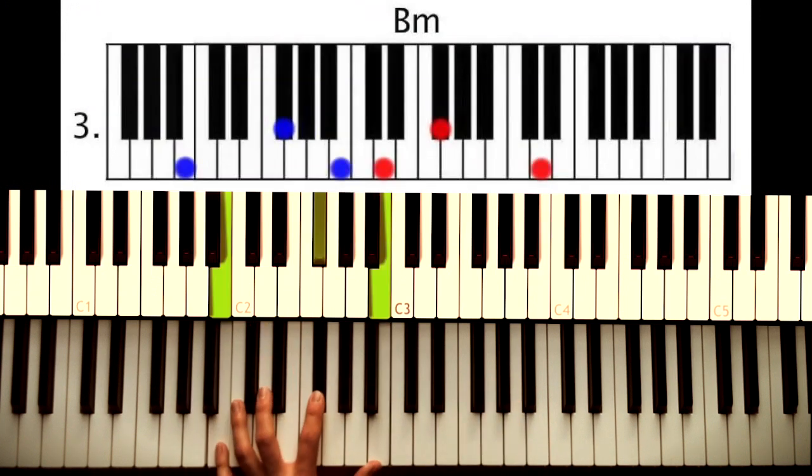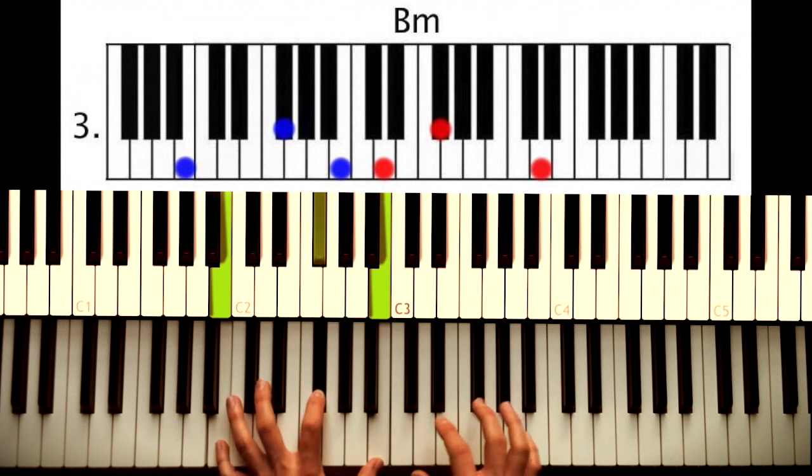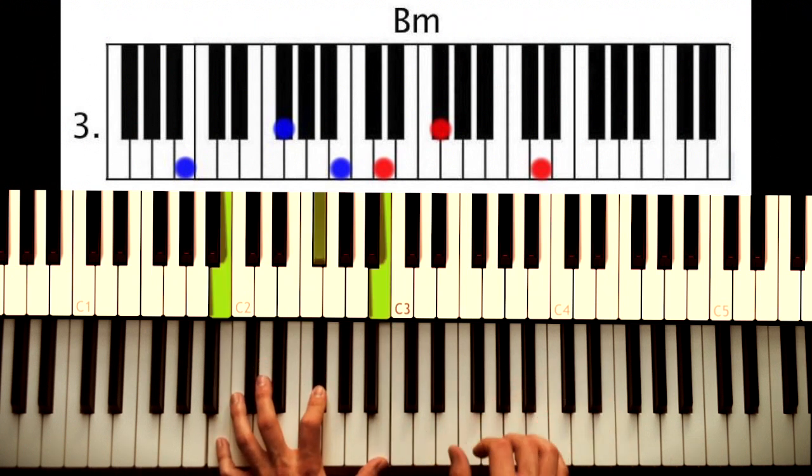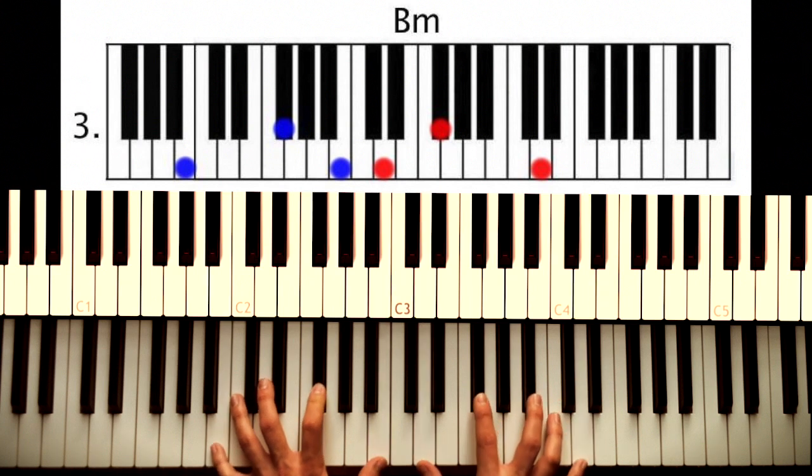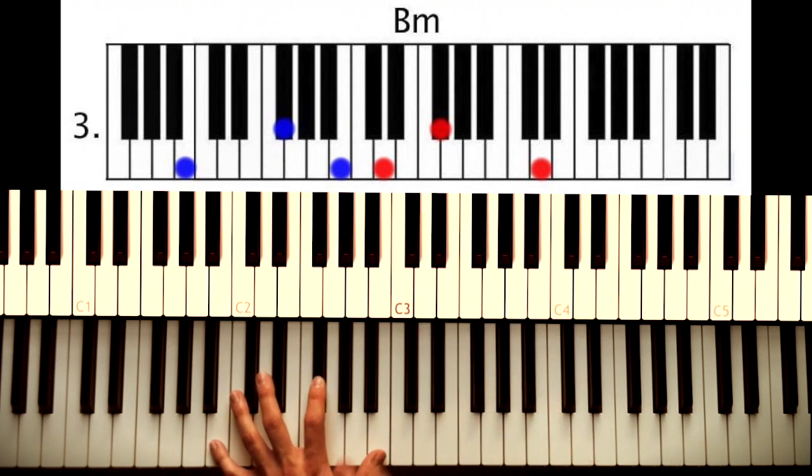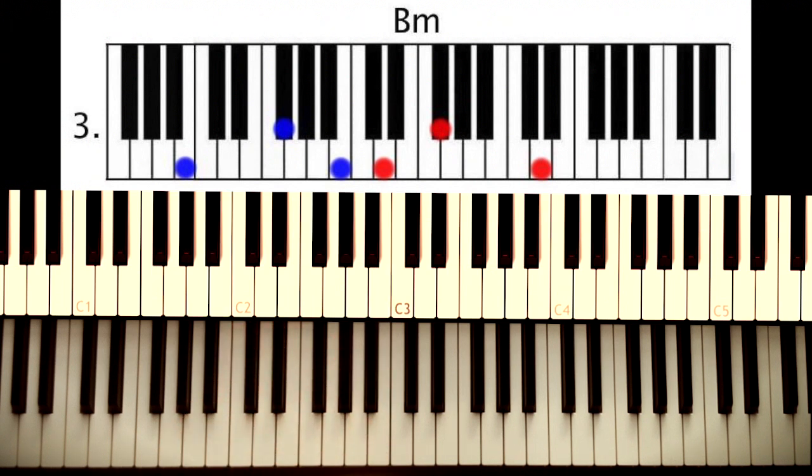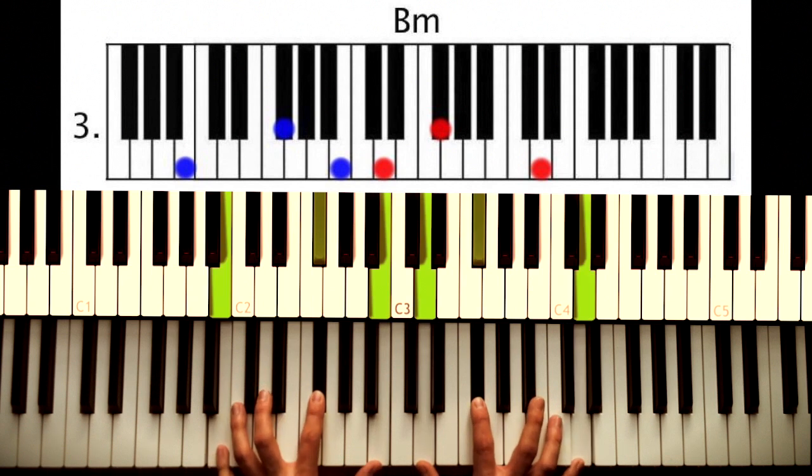Next chord is a B minor. Here the pattern for the left hand changes just this really tiny bit. The notes are B, B, and an F sharp. Right hand plays D, F sharp, D. Left hand now plays four beats instead of three. One, two, three, four. Next chord. So no longer one, two, three, but now one, two, three, four to the next chord.